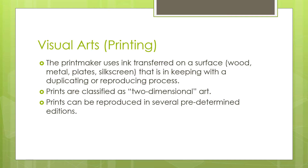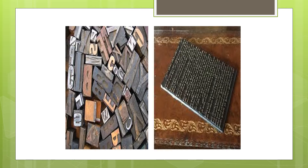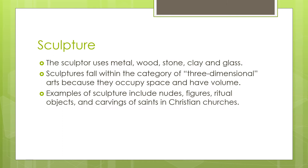Visual arts — printing. The printmaker uses ink transferred on a surface like wood, metal plates, or silkscreen, in keeping with a duplicating or reproducing process. Prints are also classified as two-dimensional art. Prints can be reproduced in several predetermined editions. These are examples of the plate and silkscreen as medium in printing, as well as woodblock and metal printing.